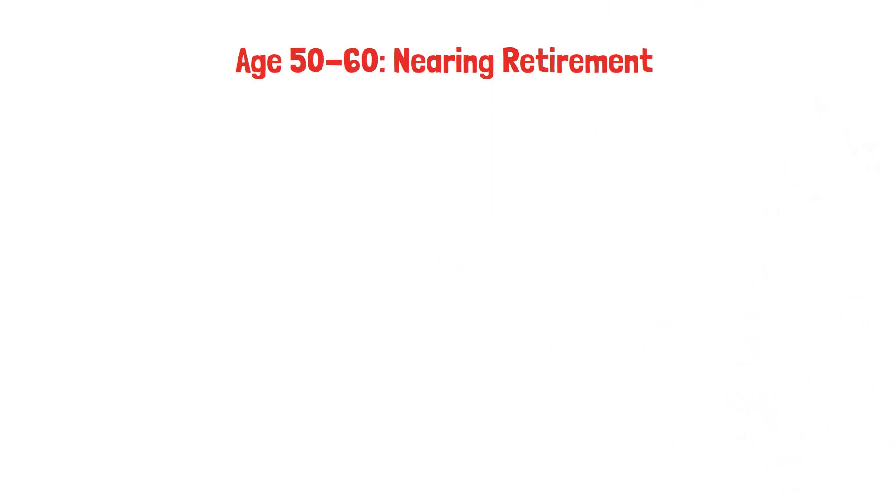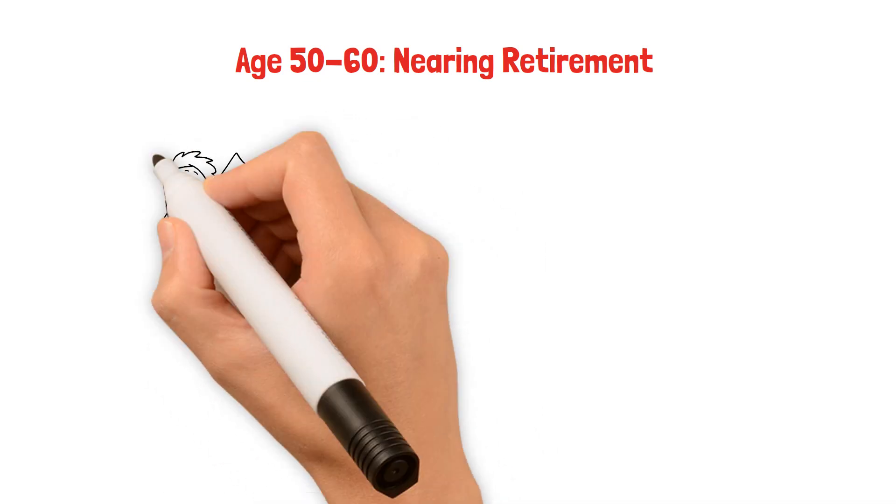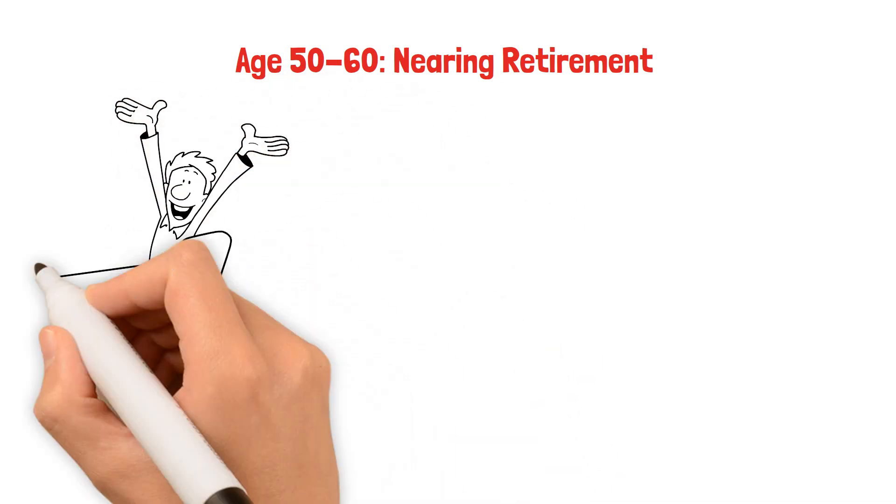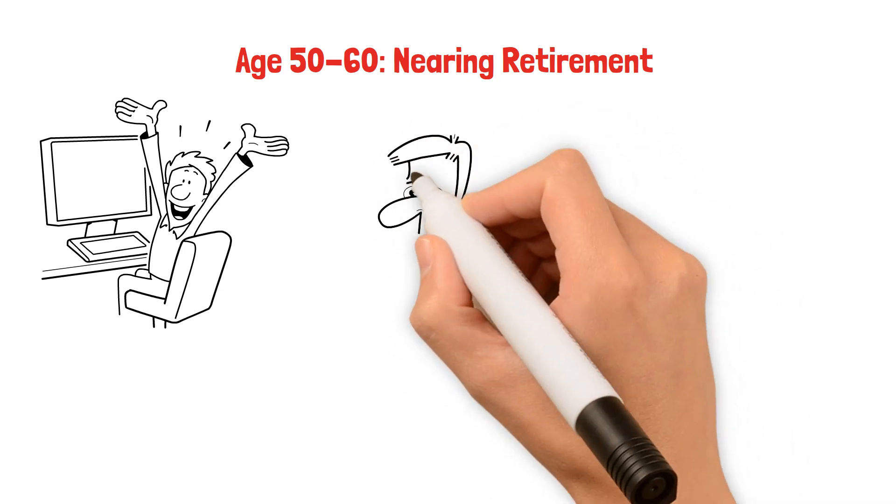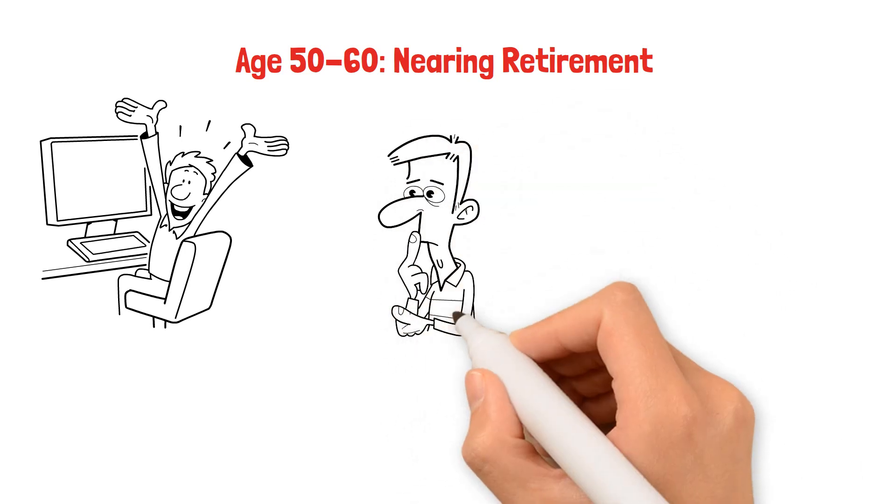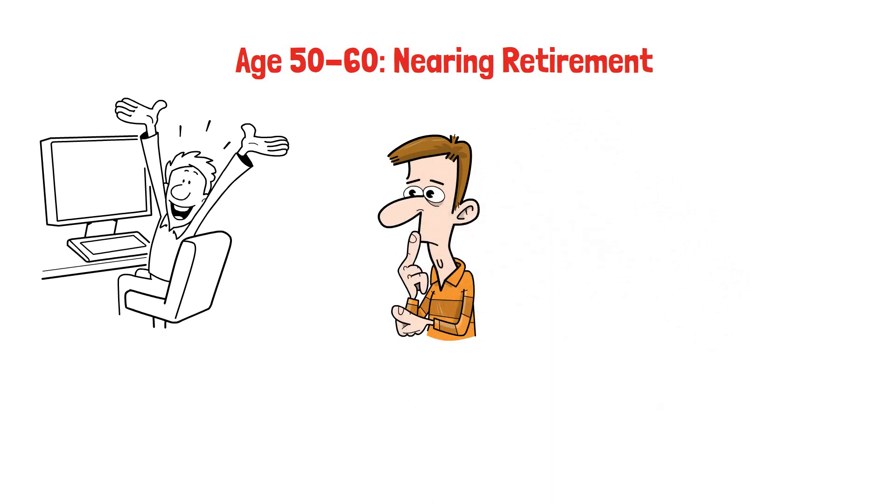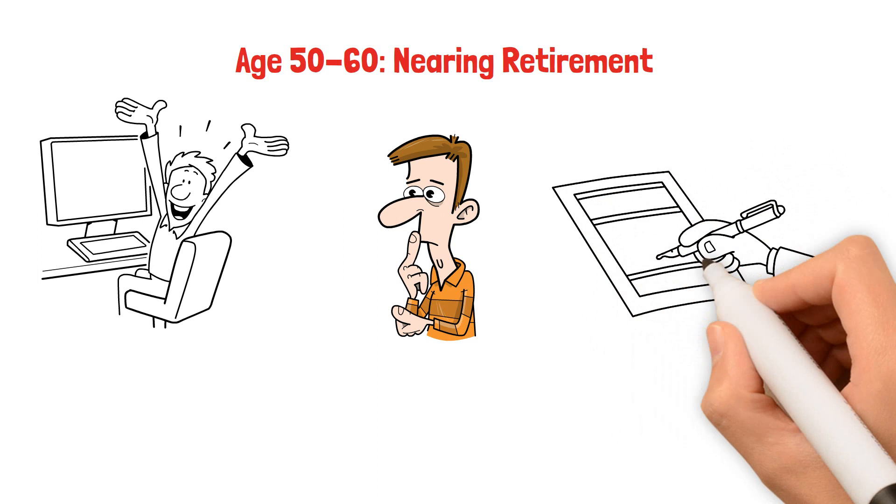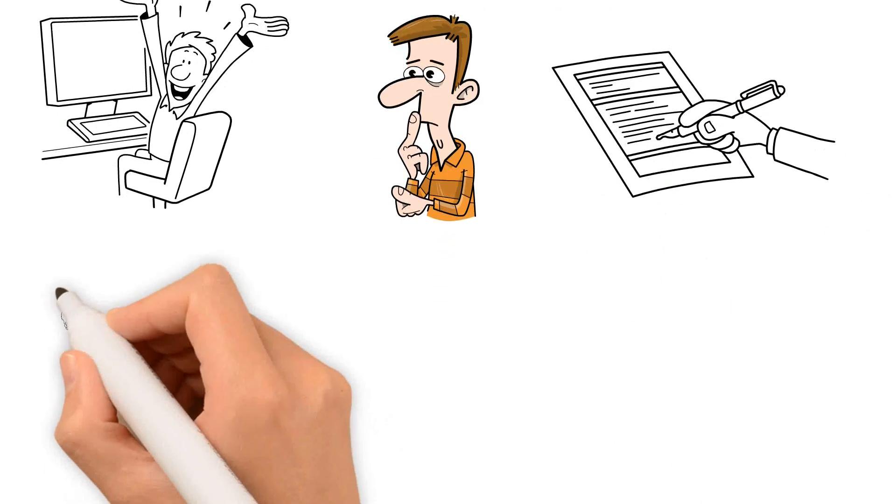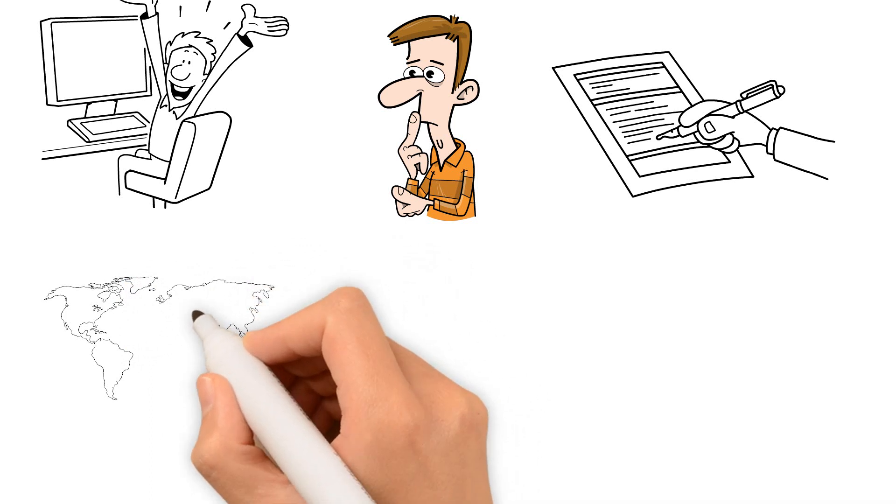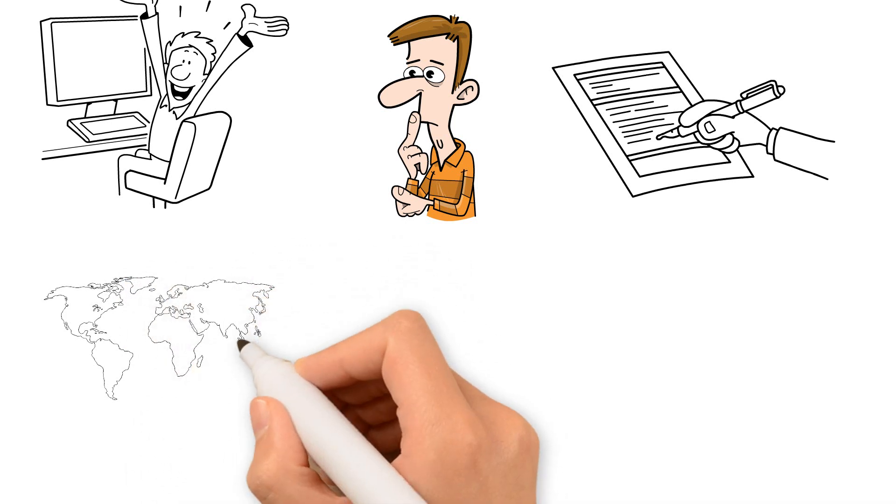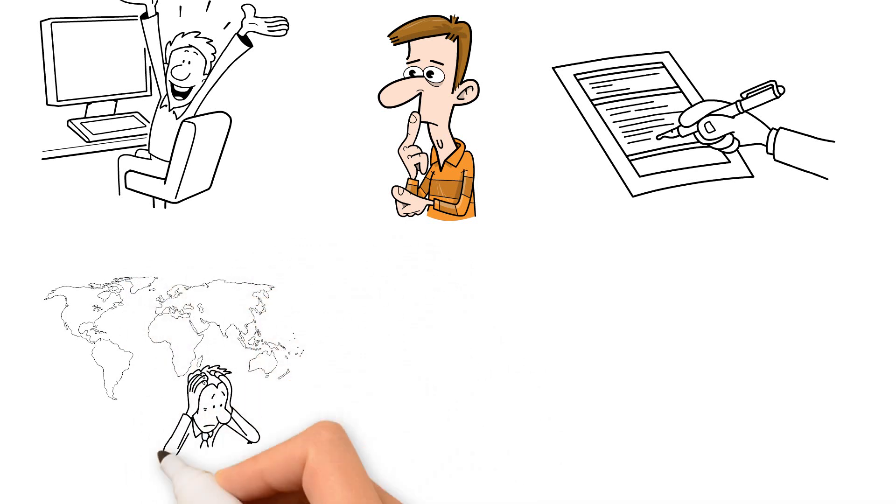Age 50 to 60, nearing retirement. The quest for financial independence assumes a new dimension as the 50s pass. Remarkably, it's not just about slowing down, it's also about wise financial choices that guarantee a pleasant retirement. The focus shifts to investments, downsizing, and careful retirement preparation. The data highlights a wide range of financial plans and highlights the particular opportunities and challenges faced by individuals who are getting close to retirement.